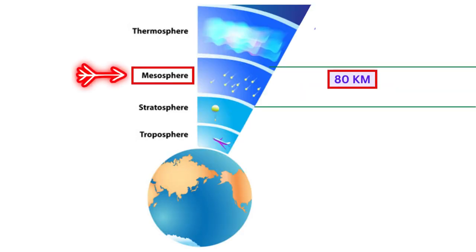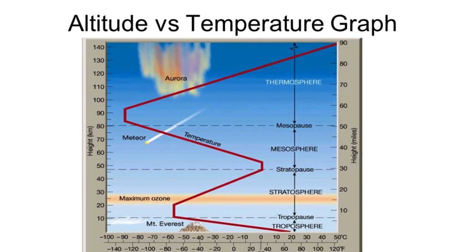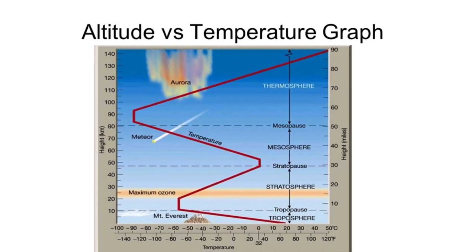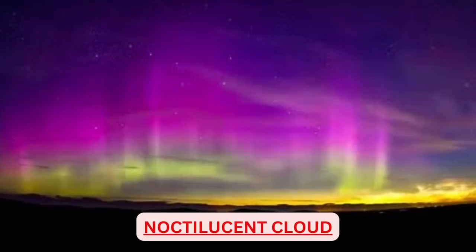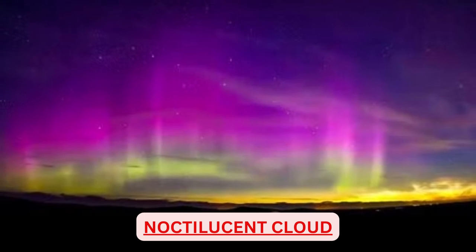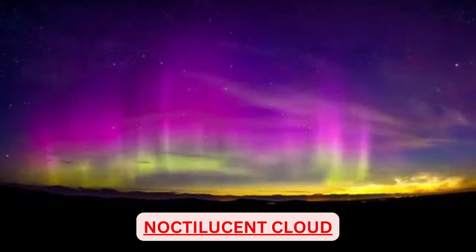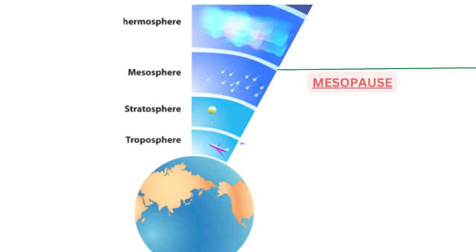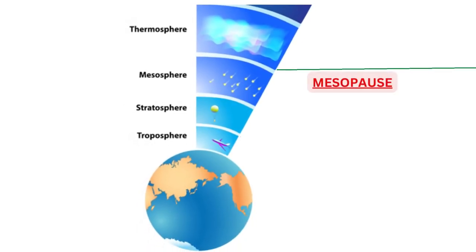Mesosphere extends from stratopause to a height of 80 km. Temperature starts reducing again with increase in height, like in the troposphere. On rare occasions, noctilucent clouds are seen in the upper mesosphere in polar regions. The top of the mesosphere is called mesopause.